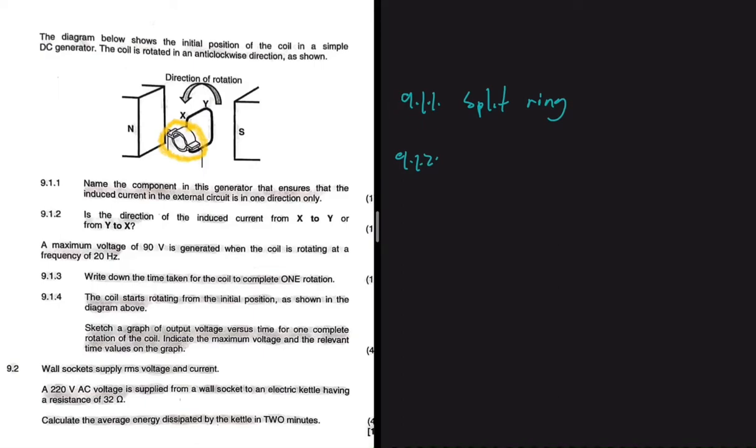Now let's do 9.1.3. So 9.1.3 is saying that a maximum voltage of 90 volts is generated when the coil is rotating at a frequency of 20 hertz.